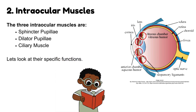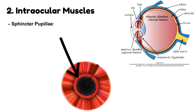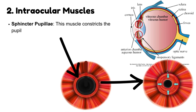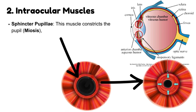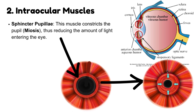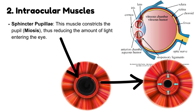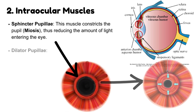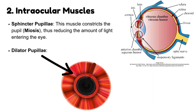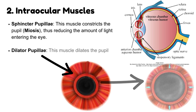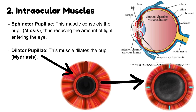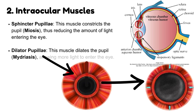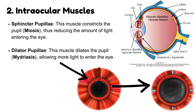Let's look at their specific functions. Sphincter pupillae: this muscle constricts the pupil, causing miosis, thus reducing the amount of light entering the eye. Dilator pupillae: this muscle dilates the pupil, causing mydriasis, allowing more light to enter the eye.